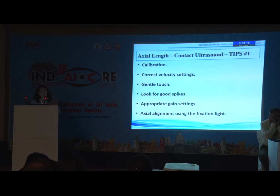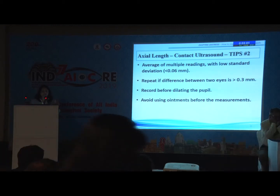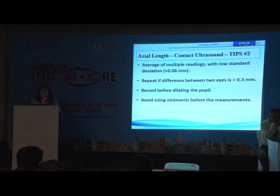Use appropriate gain settings depending on the density of the cataract, and ensure axial alignment using a fixation light source. Take an average of multiple readings; the standard deviation of each reading should be less than 0.06 mm. Repeat if the difference between the two eyes is more than 0.3 mm. Record before dilating the pupil — this is very important, as most people tend to assess the patient in the slit lamp after dilation and then do biometry, which can lead to fallacious fixation. Avoid using any ointments before measurements.